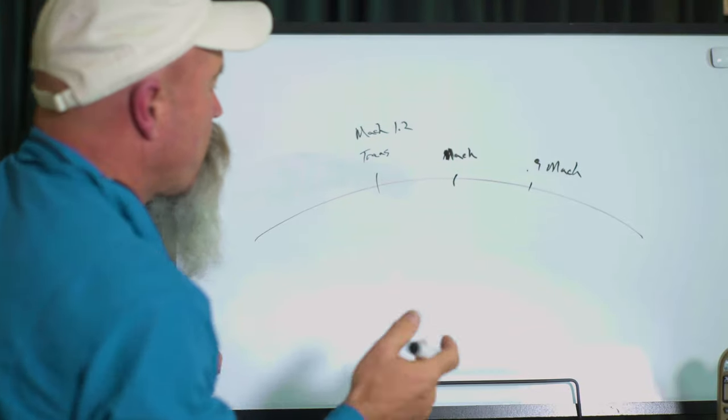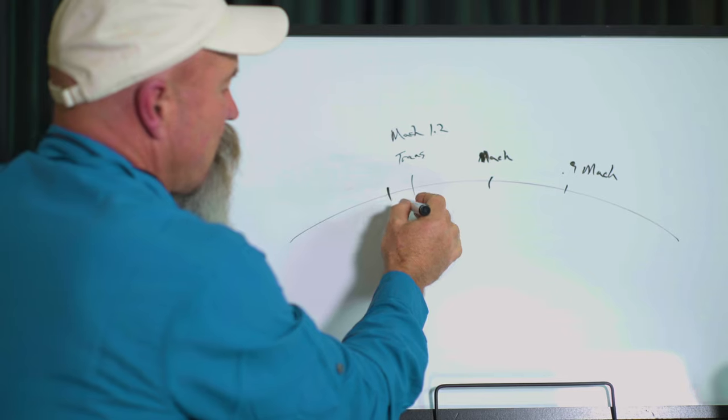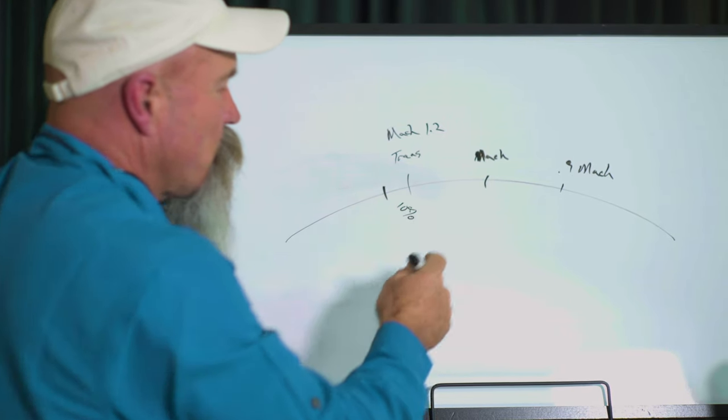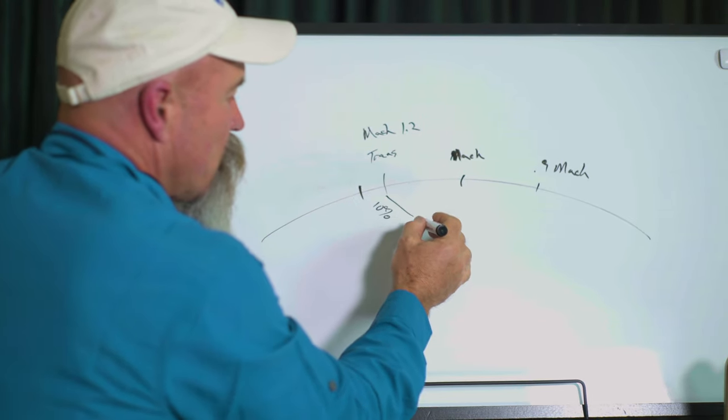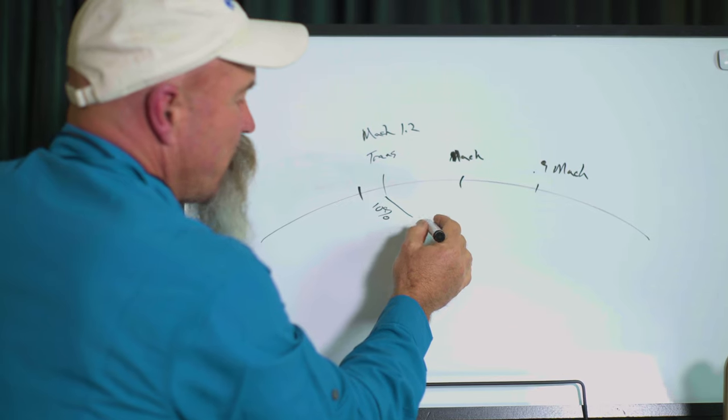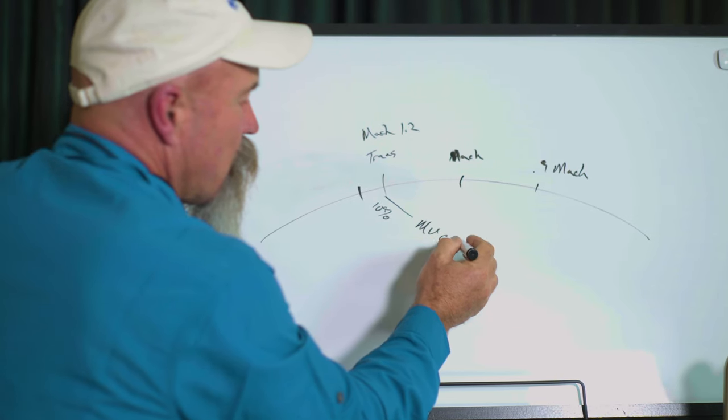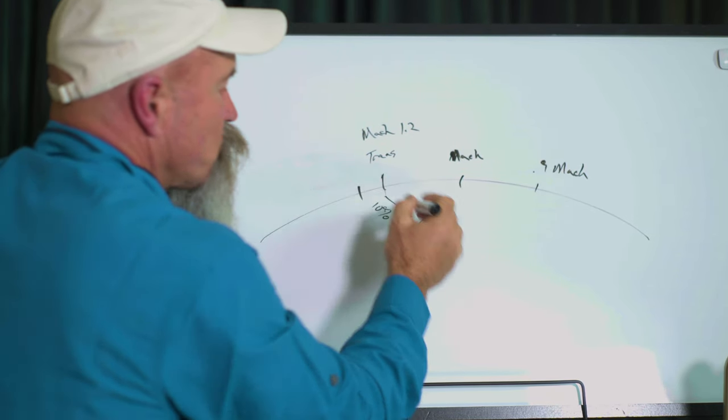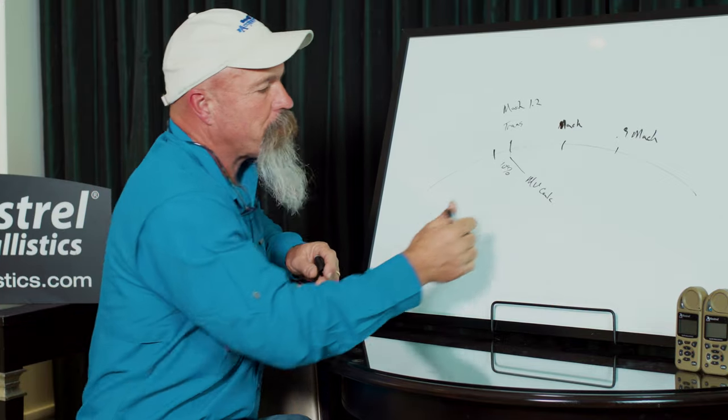We'll talk about the importance of each one. So right now I want to find within 10 percent. So this number here is trans. So when I go to MV Calc, this is the actual range it's going to give me at the top right part of the page.